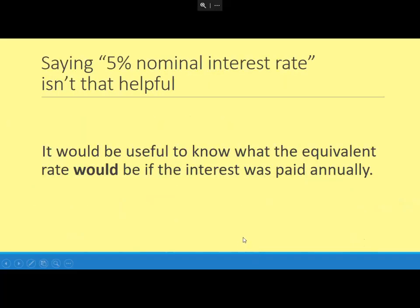So it turns out, I would suggest, that just saying it's a 5% nominal interest rate doesn't really give you the whole picture, and it's very hard to compare these nominal interest rates when the compounding periods are different.